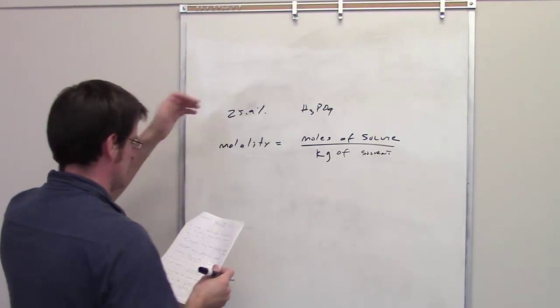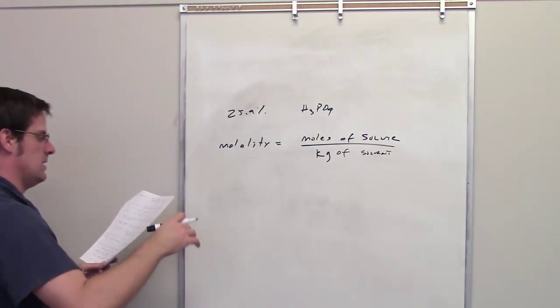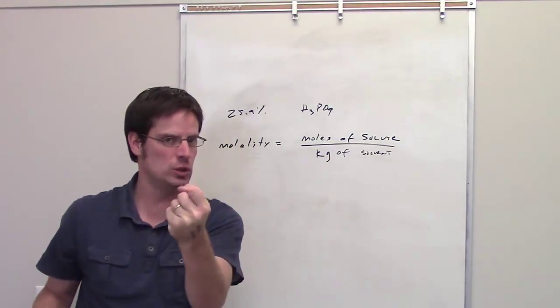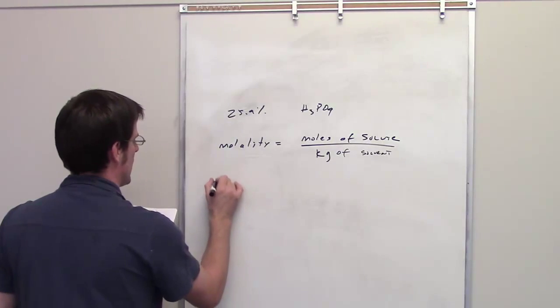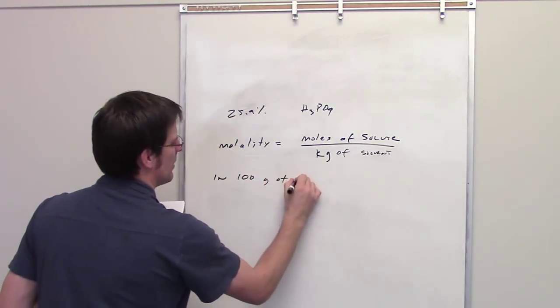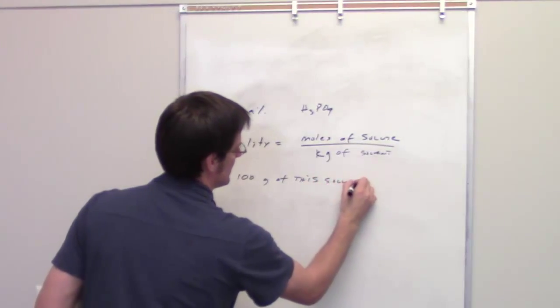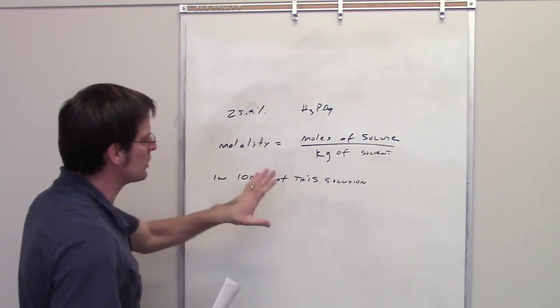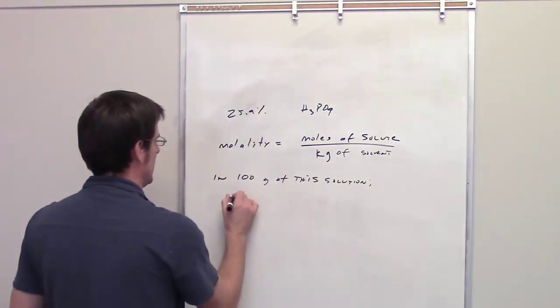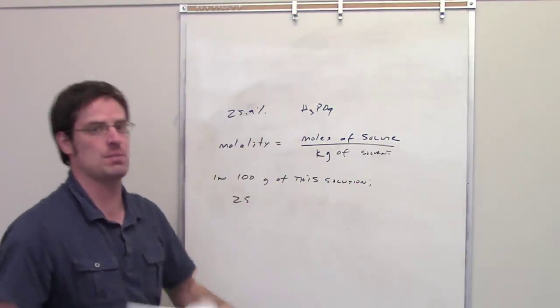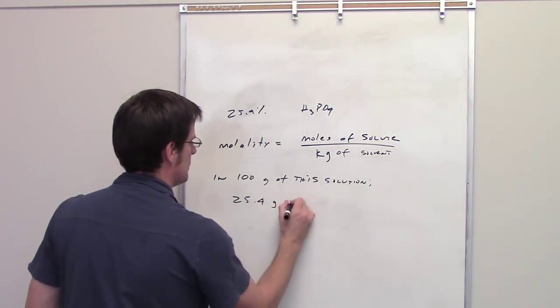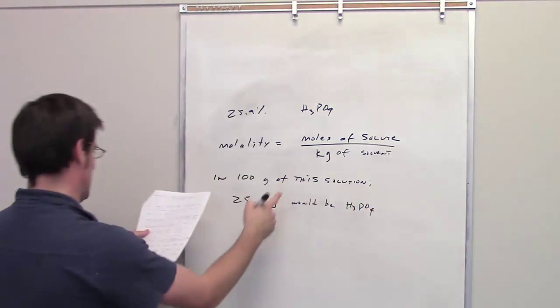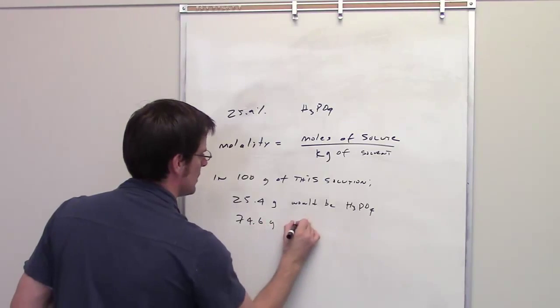So we're told once again that the solution is 25.4% phosphoric acid by mass. What that means then is that if I took 100 grams of this solution, 25.4 grams, so I'll write down in 100 grams of this solution, and by the way, the solvent in this case is presumably going to be water, that's usually the solvent we use for these strong acids. So if I had 100 grams of this solution, logically, because it's 25.4% phosphoric acid by mass, 25.4 grams would be phosphoric acid, and then whatever is left, which is 74.6 grams, would be water.